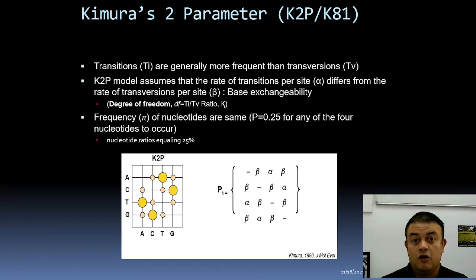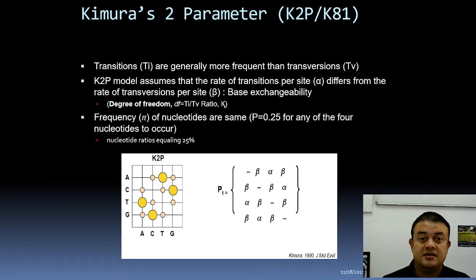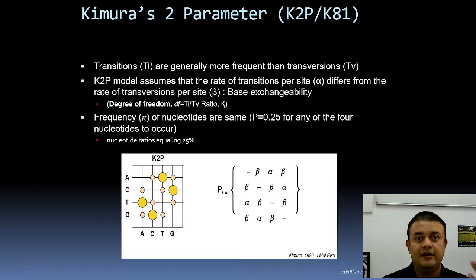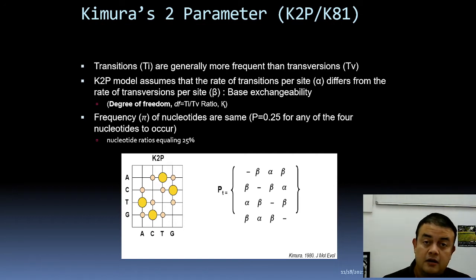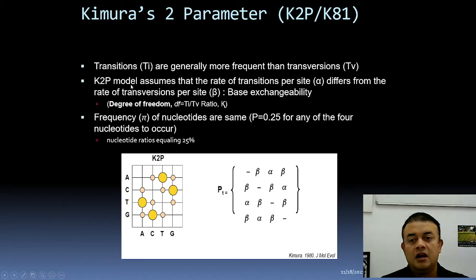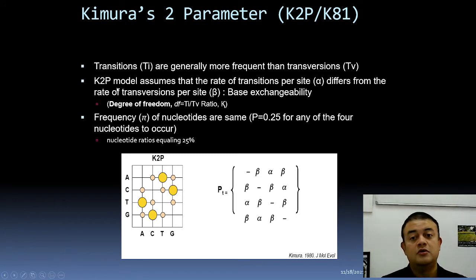The K2P model — also called K81 because the paper was published in 1981 — was developed by Japanese population geneticist Motoo Kimura, the same person behind the neutral evolution theory and a prolific researcher. This model shows that transitions are generally more frequent than transversions and need a different rate.